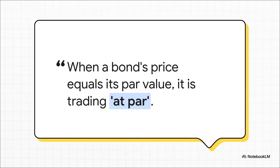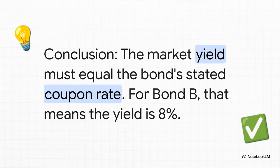There's actually a term for this in finance — when this happens, we say the bond is trading at par. And that's a huge signal. It tells us something very specific about the bond's yield. When a bond trades at par, it means the market yield is exactly the same as the bond's coupon rate. So for Bond B, that means the yield is 8%. We found our key.